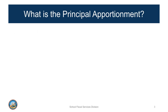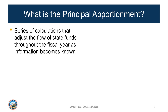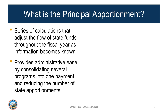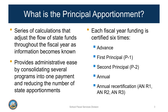To set the context for discussing data collection, we'll provide a brief overview of the Principal Apportionment. The Principal Apportionment is a series of calculations that adjust the flow of state funds throughout the fiscal year as information becomes known. This system provides administrative ease by consolidating several programs into one payment and reducing the number of state apportionments. For each fiscal year, funding is calculated six times: the advanced, P1 and P2 certifications occur during the fiscal year of funding, annual apportionment, plus three recertifications of the annual apportionment, which occur after the fiscal year is over.